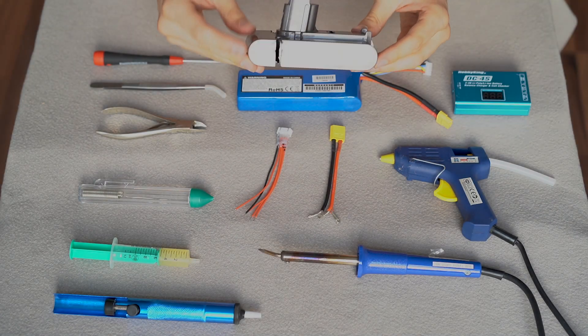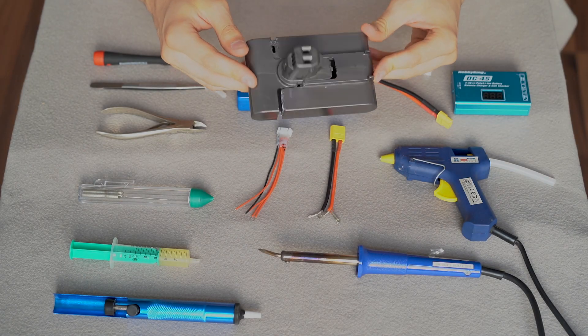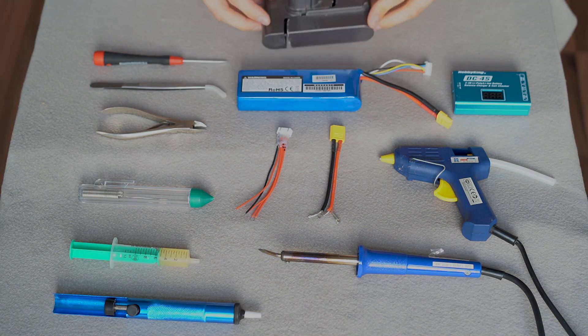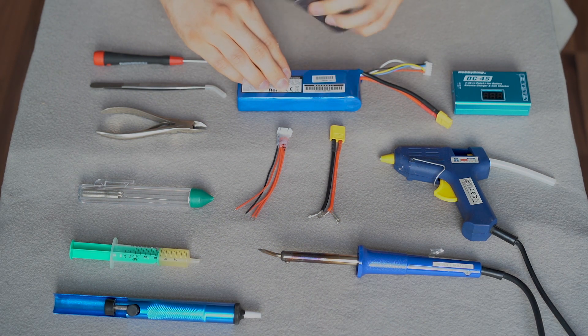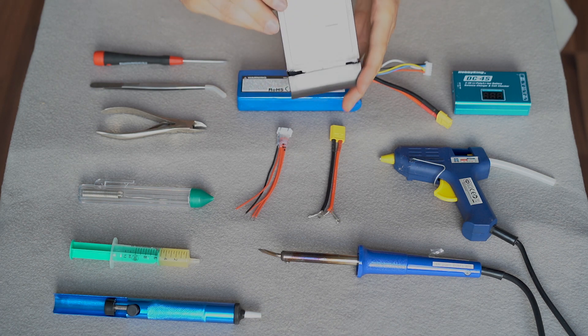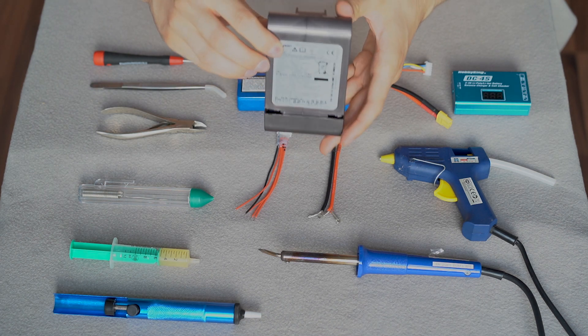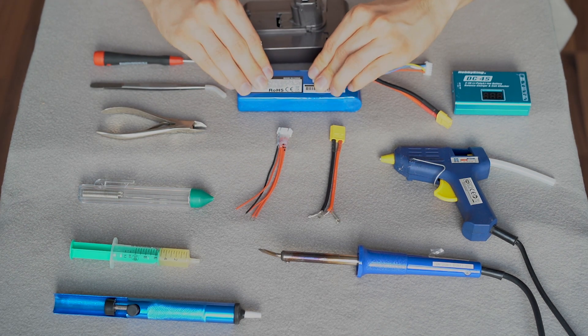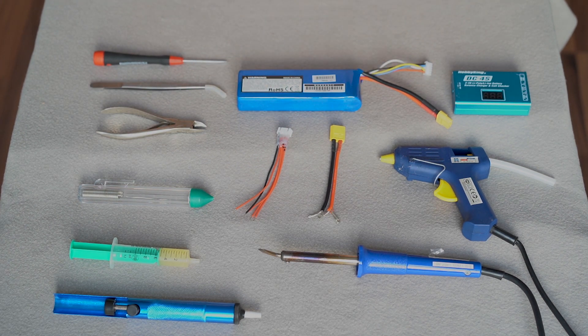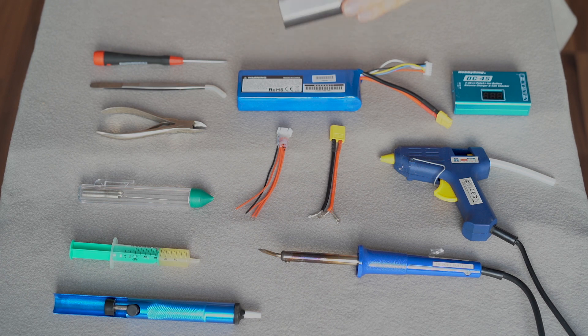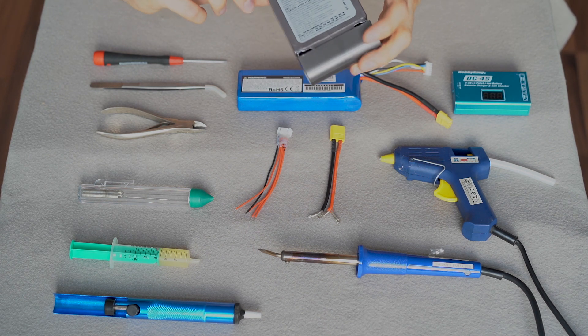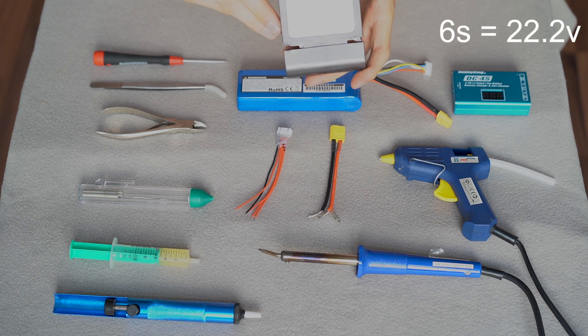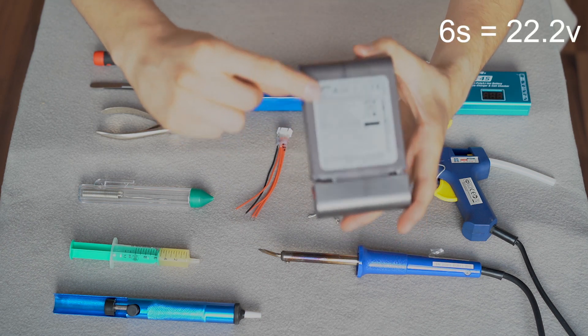For this modification you will obviously need original Dyson battery. You will need to use either 4 cell if your original battery is 14.8 volt, or if your battery is higher voltage then you should probably use 6 cells so the voltage should be around 21 or 22 volts.